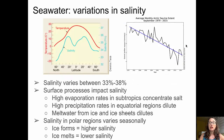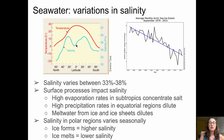Salinity varies between about 33 and 38 parts per thousand. Surface processes that impact salinity include high evaporation rates in the subtropics, which concentrate the salt — visible in the diagram where the blue salinity line shows peaks in the subtropical regions north and south of the equator. High precipitation rates in the equatorial regions create a dip in salinity by adding fresh water, and melt water from ice and ice sheets also dilutes salinity.